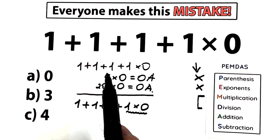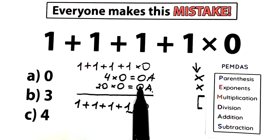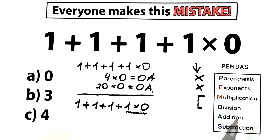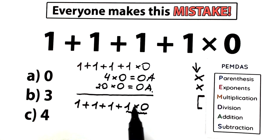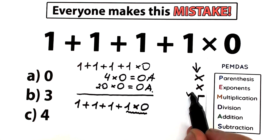Not like adding first, which is absolutely wrong — we can't solve it that way. We should apply only this multiplication to these two numbers, 1 and 0. So we have multiplication, and we don't have division.